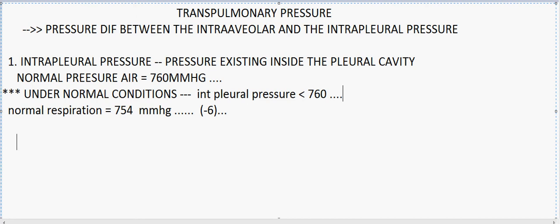Normally the intra-pleural pressure is negative, but under pathological conditions — for example, when a patient is suffering from a pneumothorax — the intra-pleural pressure tends to become positive. Under such pathological conditions, the patient may experience an intra-pleural pressure which is positive in number.